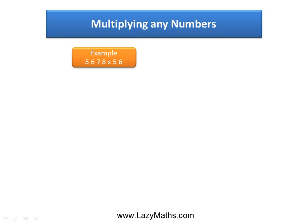Here is another example of multiplying any number using the Trachtenberg speed multiplication method: 5,678 times 56.